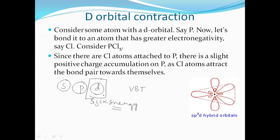We know that PCl5 does exist and phosphorus undergoes sp3d hybridization, overlapping with chlorine atoms to form trigonal bipyramidal geometry. So how do we explain the existence of PCl5? This can be explained based on d-orbital contraction.